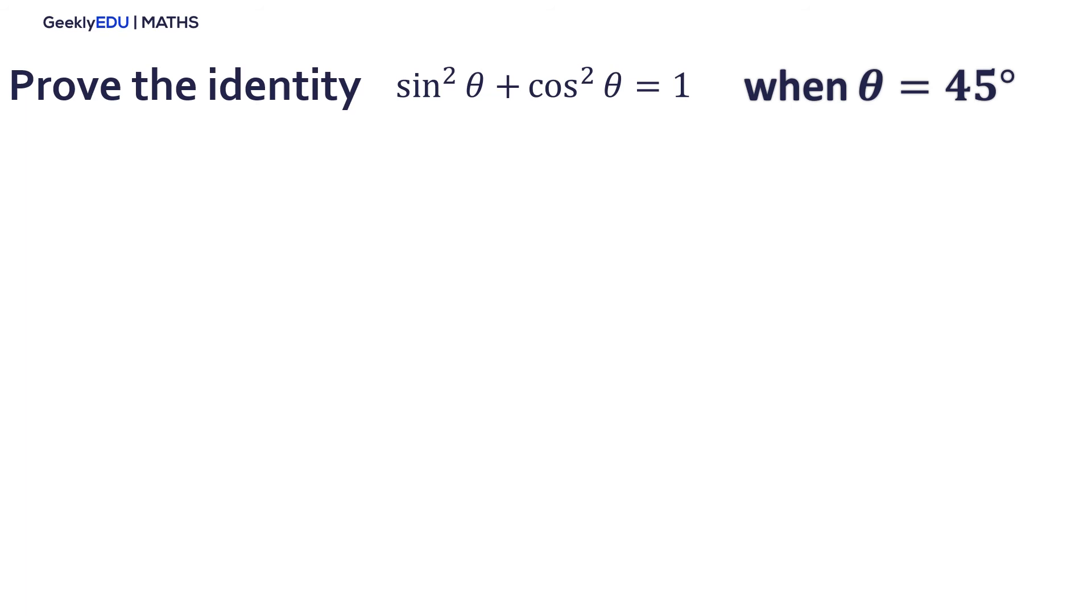Let's solve one more exercise together. In this case, we are going to prove the identity sine squared of theta plus cosine squared of theta equal to 1 when theta is equal to 45. The first step is to substitute theta equal to 45 in the identity and with the properties of the powers, we know that this is true. And now we are going to use the values of the table to substitute sine of 45 degrees and cosine of 45 degrees.